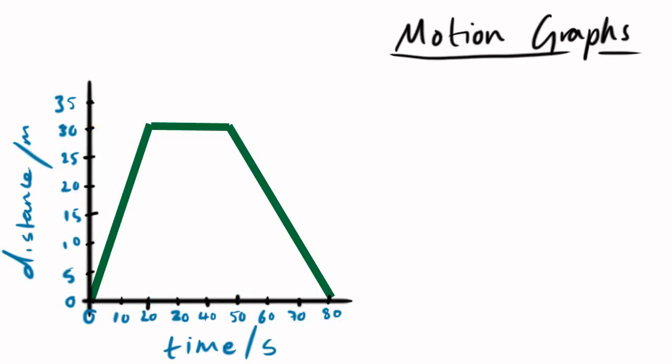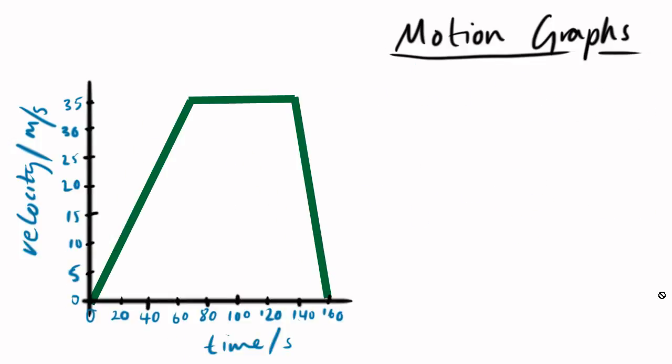The other type of graph is a velocity time graph. Now it looks very similar, doesn't it, but it means very different things. So make sure that you know what type of graph it is given to you in the question. You can get some information from it straight away. A straight line upwards is an acceleration. So that object is accelerating. It started at 0 metres per second, and it accelerated to 35 metres per second. So it changed its speed.